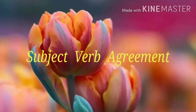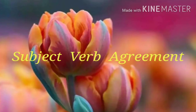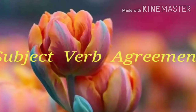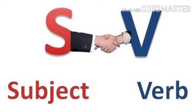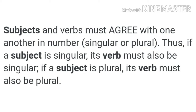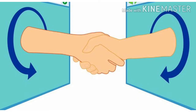Hello everyone. Today in this video we are going to learn the topic subject-verb agreement. We know that every sentence has a subject and a verb. Amazing things can be achieved when people are agreeable and learn to work with each other. In the same way, subject and verb agreement works. Subjects and verbs must agree with one another in number — singular or plural.